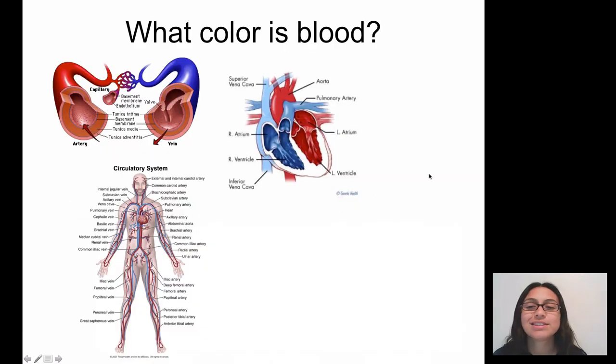All right, so what is the color of blood? Now, when we look at diagrams, scientific diagrams, we notice that we use red and blue. We use red for oxygen-rich blood and blue for oxygen-poor blood. However, blood is never, ever blue.